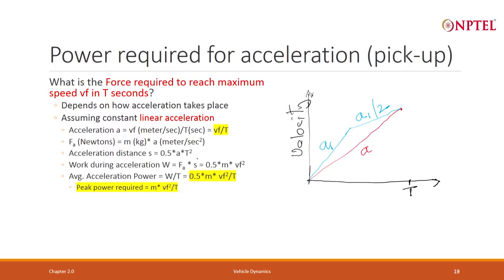Typically, a vehicle is often defined when you go to purchase it by how much acceleration it gives. You typically ask: if I want to go to the maximum velocity, in how many seconds can I do so? When I start at 0, do I go to the final velocity Vf in T seconds? T can be 10 seconds, 20 seconds — that often becomes a comparison between one vehicle and another.